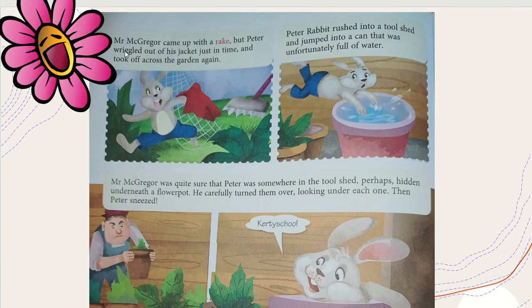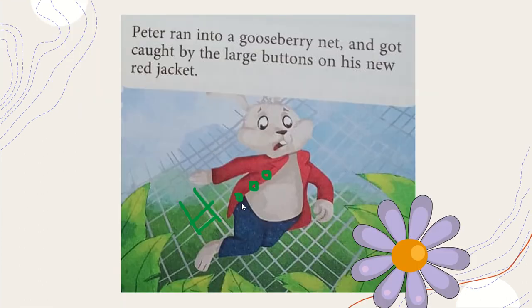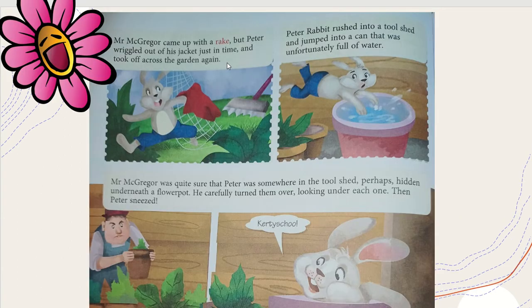Mr. MacGranger came up with a rake, but Peter wriggled out of his jacket just in time and took off across the garden again. He saw MacGranger coming, and at the last moment just threw off his jacket, leaving it caught in the net, and rushed out.